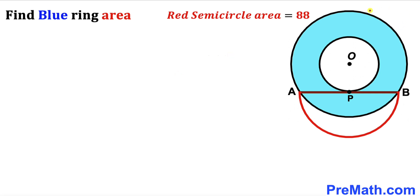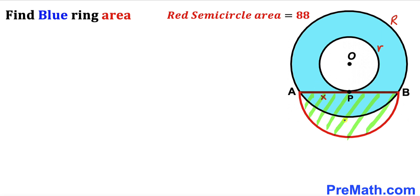Let's focus on this big circle. Let me label the radius of this big circle as uppercase R. Now let's focus on this smaller circle — let me label the radius of this smaller circle as lowercase r. Now let's focus on this red semicircle; we are going to label its radius as lowercase x.